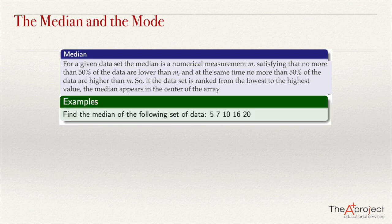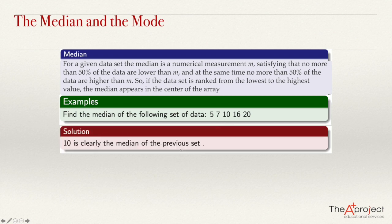For example, if we have an array like this: 5, 7, 10, 16, 20 — these are five data ordered from the lowest to the highest. The data in the middle is the median. So this 10 in this case is the median. 10 is clearly the median of this set.